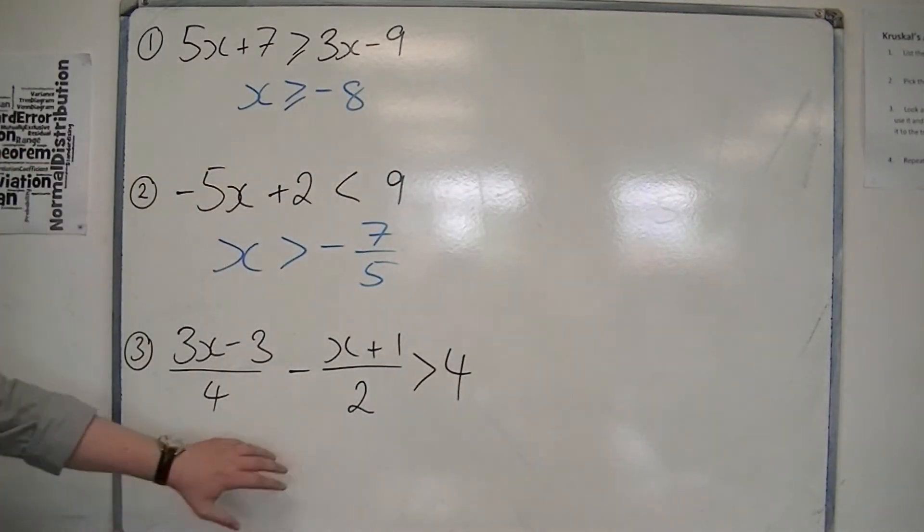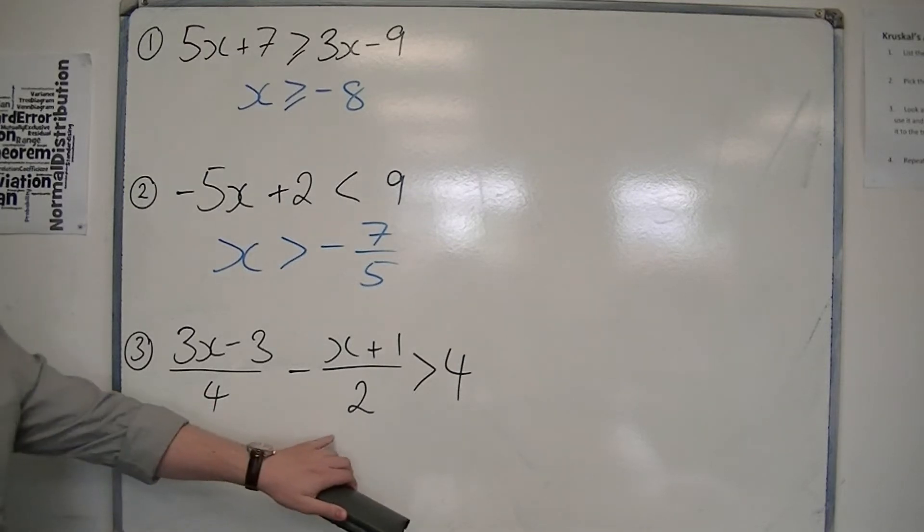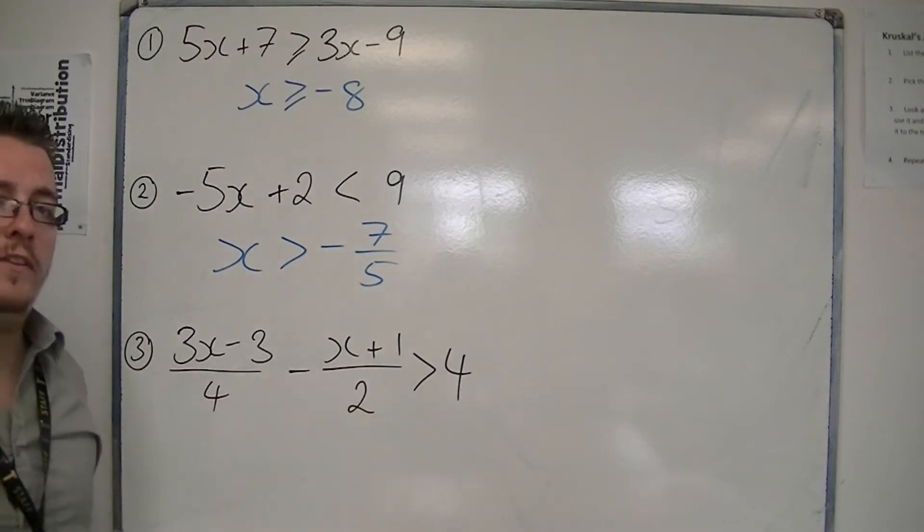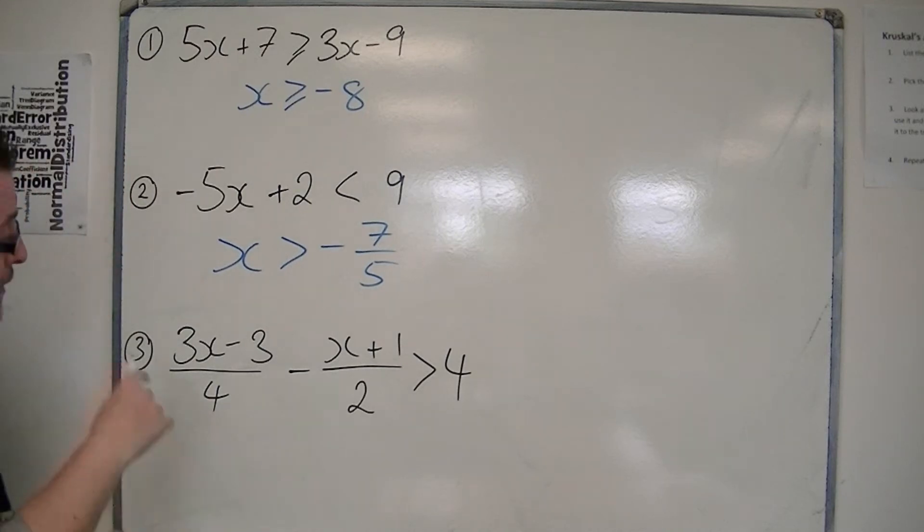Finally, the third one: 3x minus 3 over 4, minus x plus 1 over 2, is greater than 4. First, I'll multiply through by 4.